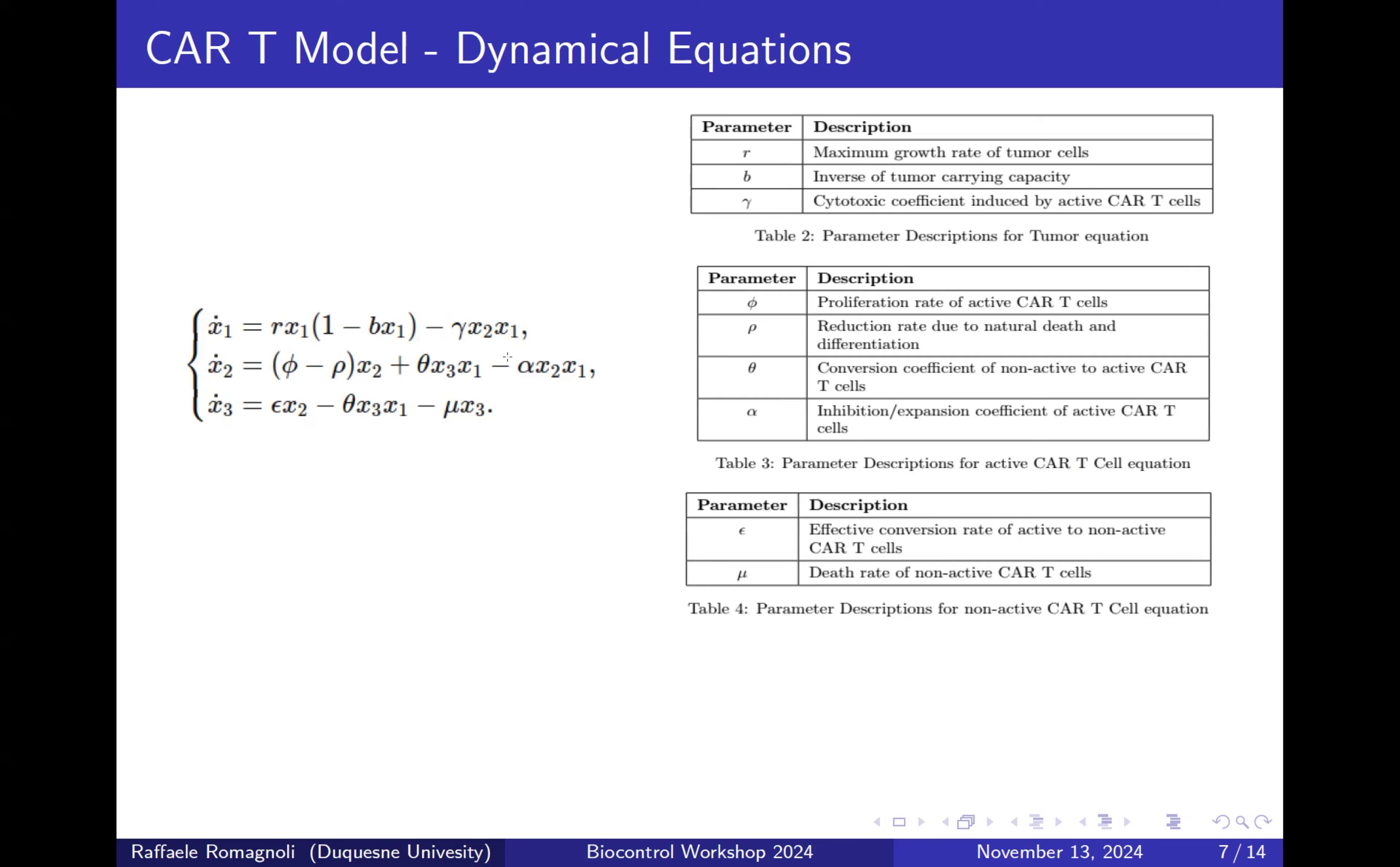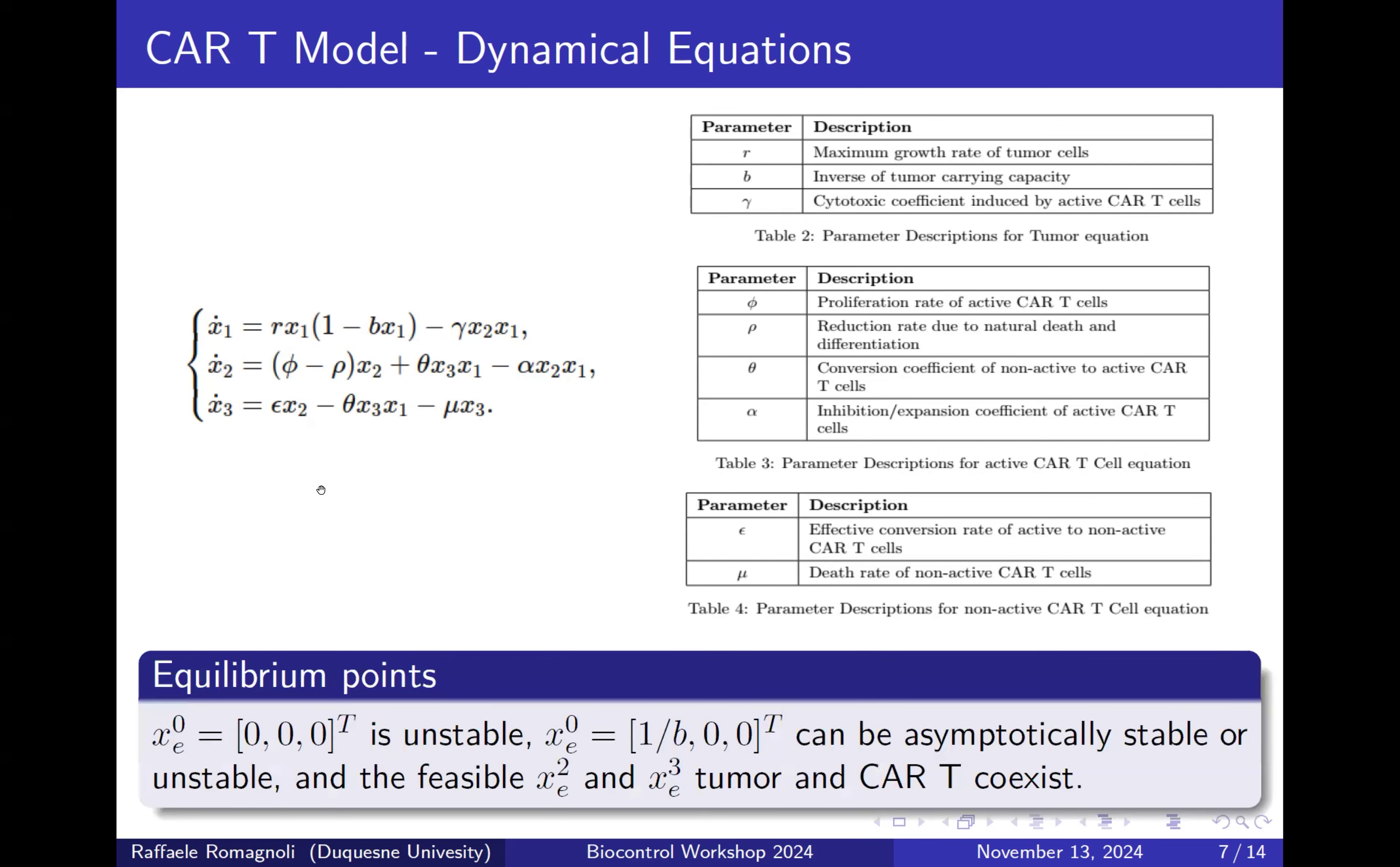In this model, in absence of tumors, so X1 equals zero, X2 and X3 represent a linear asymptotically stable model. The number of CAR-T cells are going to zero. Analyzing this model, we found four equilibrium points. In particular, we are interested in the equilibrium point where all the cells are zero, which means that we can achieve tumor clearance. But unfortunately, with this model, because it's more like a prey-predator model, it's going to be unstable.